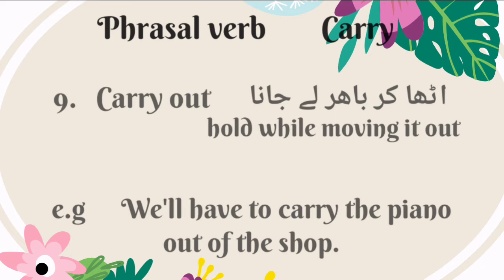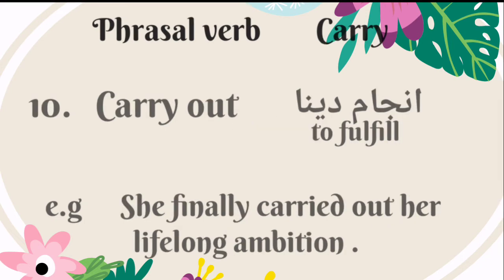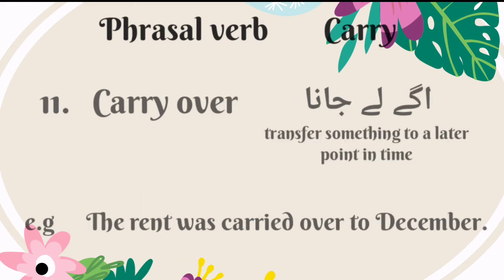The ninth phrasal verb is 'carry out.' It means hold while moving it out — Urdu mein is ka matlab hai utha kar baahir le jaana. For example: we'll have to carry the piano out of the shop. The tenth phrasal verb is also 'carry out,' meaning to fulfill — Urdu mein is ka matlab hai anjaam deyna. For example: she finally carried out her lifelong ambition. The eleventh phrasal verb is 'carry over.' It means transfer something to a later point in time — Urdu mein is ka matlab hai aage le jaana. For example: the rent was carried over to December.